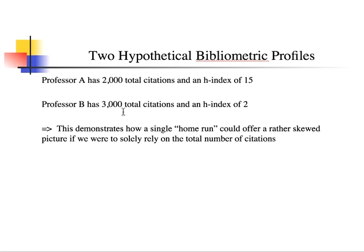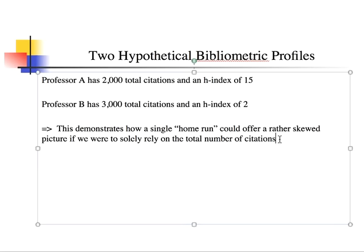Professor B has more citations — 3,000 — so if we're only looking at citation counts, you'd say this professor has been cited a thousand times more. But Professor B's H-index is only 2, meaning a single home run could offer a rather skewed picture if we solely focus on total citations. The H-index, while it has some bibliometric flaws, is now very much accepted as the measure by which we typically quantify the influence of a scholar.